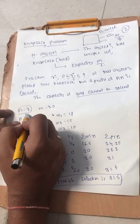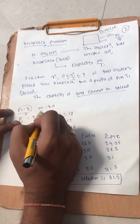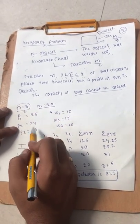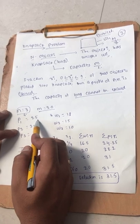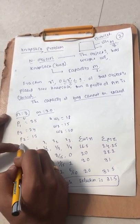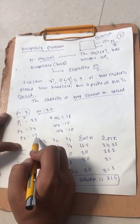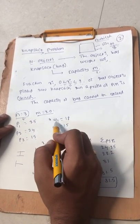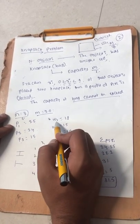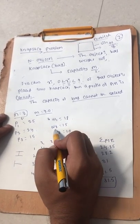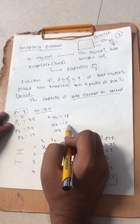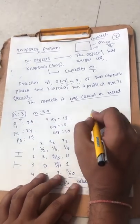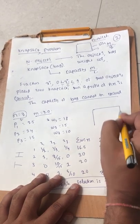We have three objects and the bag capacity m is 20. The profits are: p1 = 25, p2 = 24, p3 = 15. The weights are: w1 = 18, w2 = 15, w3 = 10.